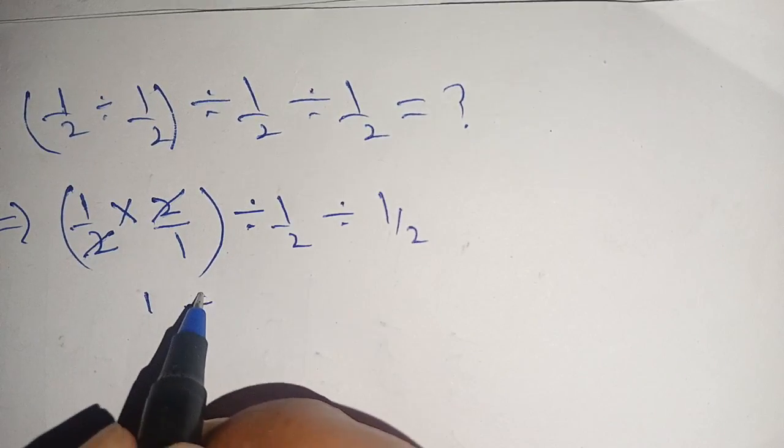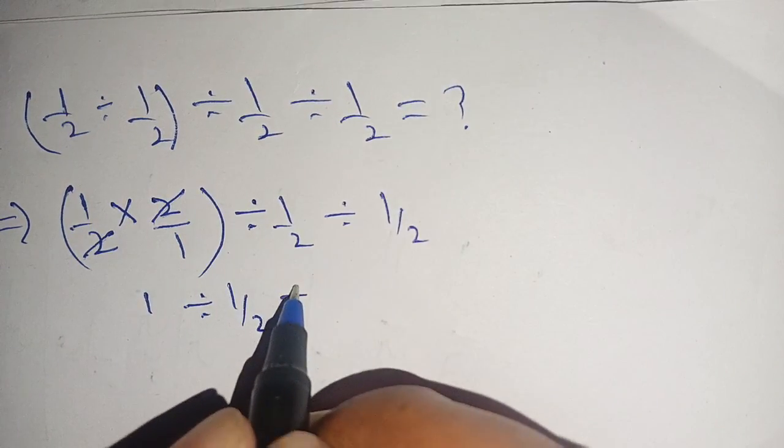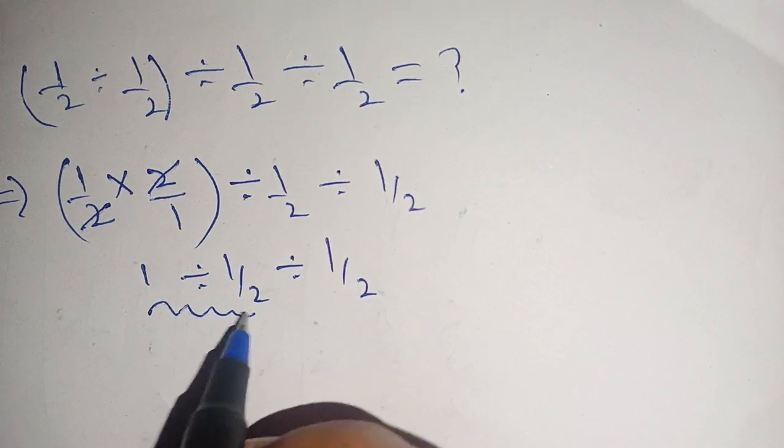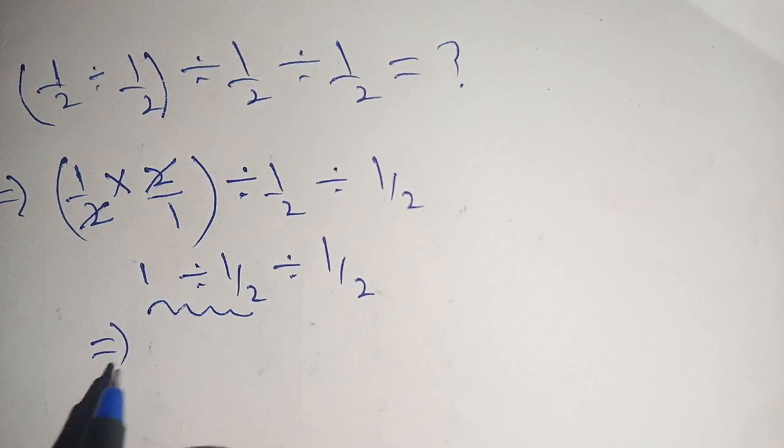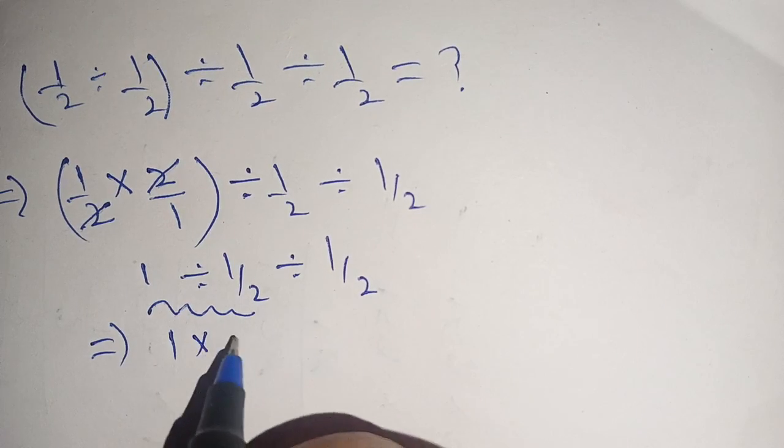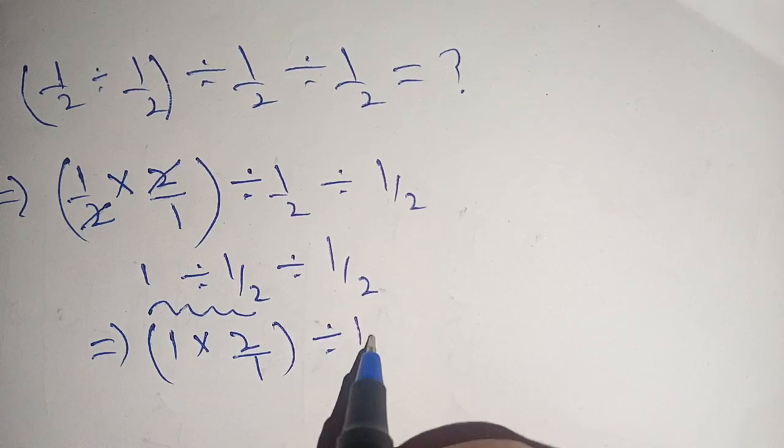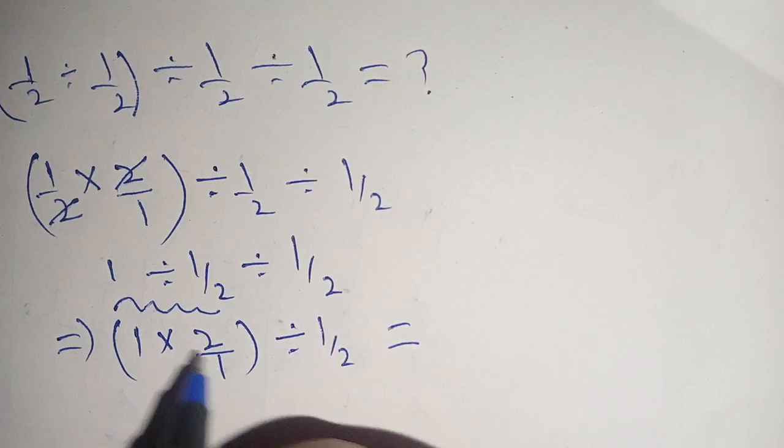Now we solve these two terms. We write this as 1 multiplication 2 divided by 1 divided by 1/2. Now we can write this as 2 times 1, it becomes 2 divided by 1, divided by 1/2.